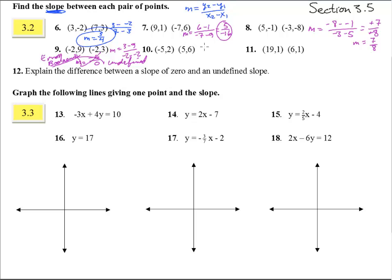Number 10, 6 minus 2 over 5 minus negative 5. We get 4 over 10, slope is 4 tenths.